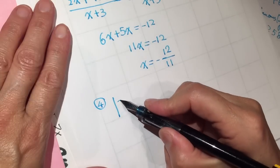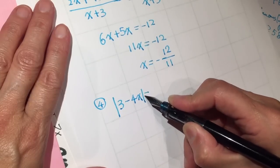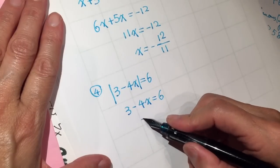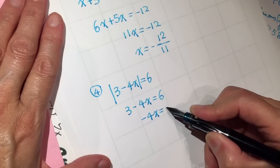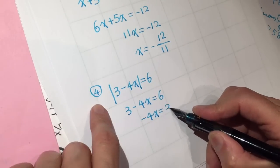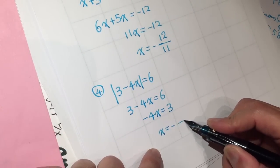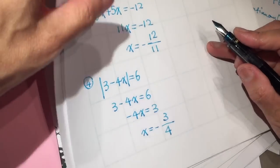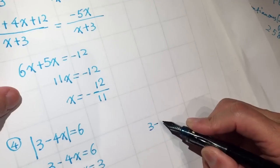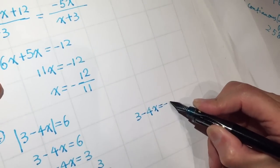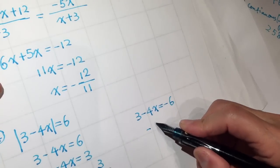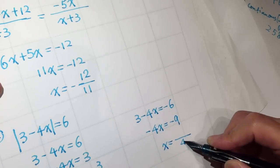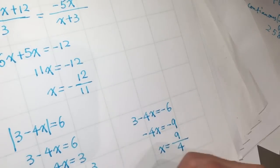Absolute value of 3 minus 4x equals 6. So we get 3 minus 4x equals 6, giving negative 4x equals 3, so x equals negative 4 out of 3. This is one answer. The other answer is 3 minus 4x equals negative 6, so negative 4x equals negative 9, giving x equals 9 over 4. Two answers.